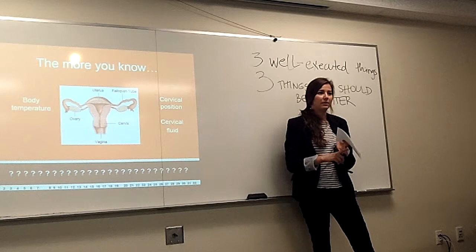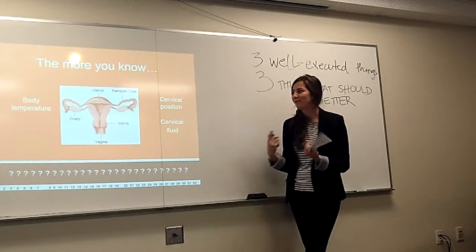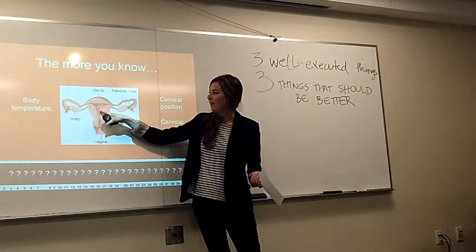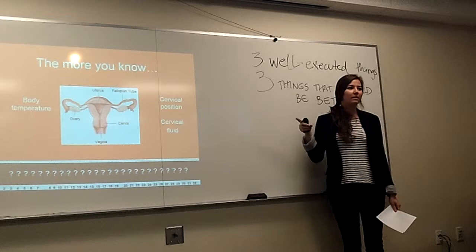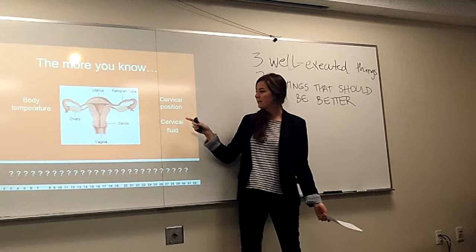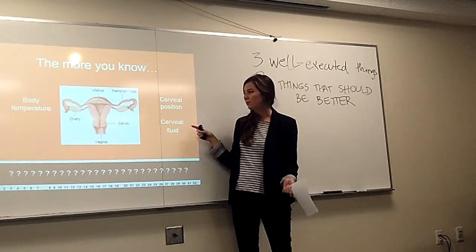This method tracks three parameters in the menstrual cycle: body temperature, cervical position, and cervical fluid. Just in case you don't know what a cervix is — the cervix is located here. This is the uterus, where sperm fertilizes an egg and the baby grows, and is pushed out through the cervix when born. Throughout the menstrual cycle, the cervix changes position, and these position changes are the same every single cycle. The same goes for the cervical fluid.